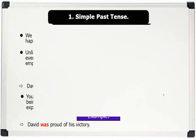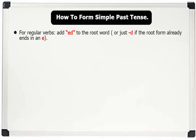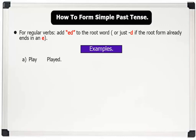How to form simple past tense. 1. For regular verbs, add -ED to the root word, or just -D if the root form already ends with the letter E. Examples: Root word 'play' becomes 'played'. Root word 'love' becomes 'loved'.